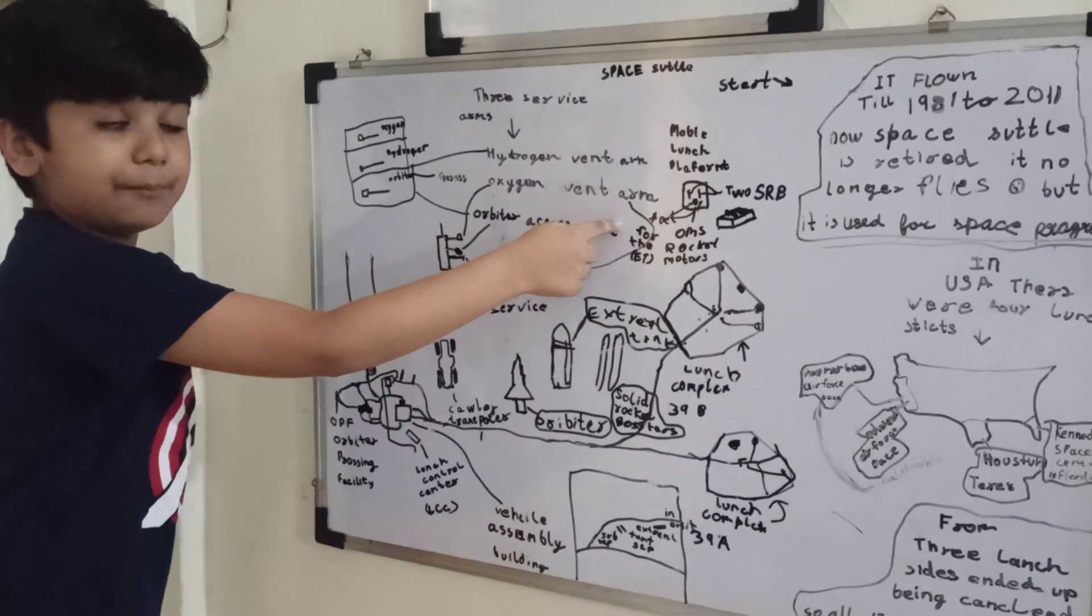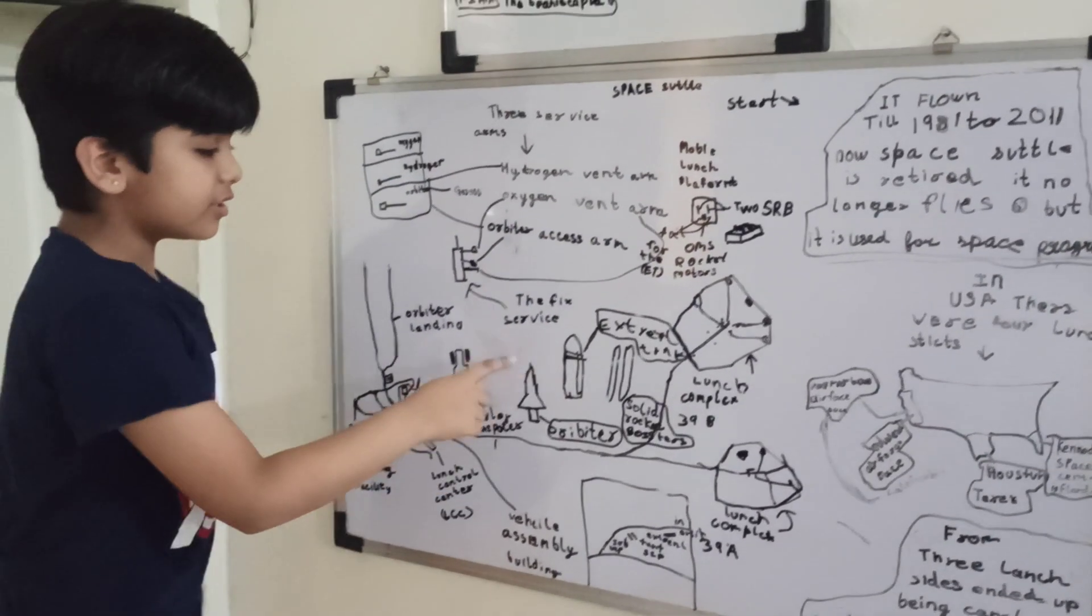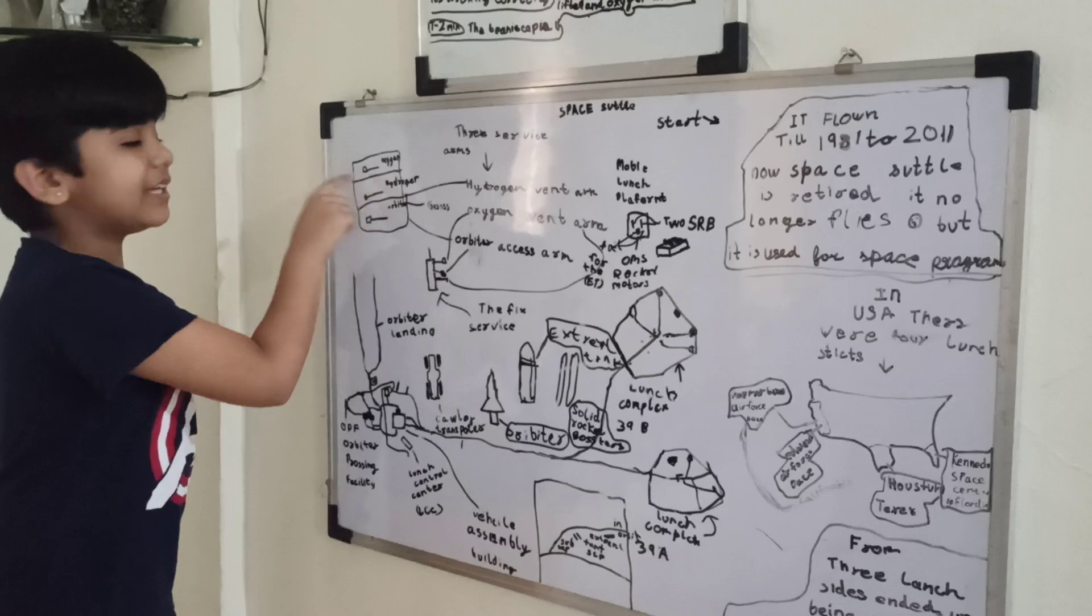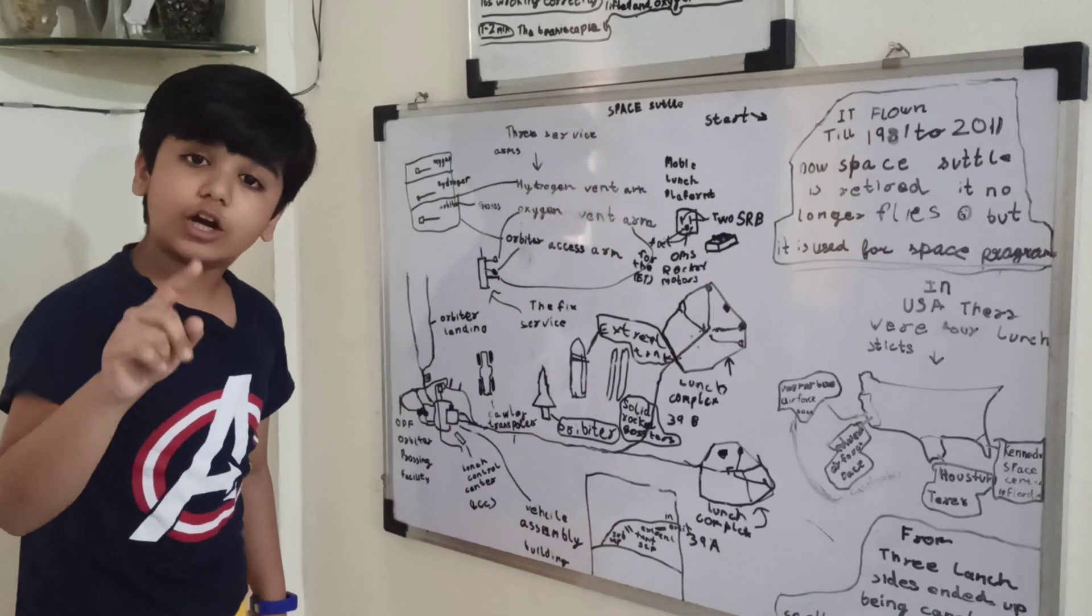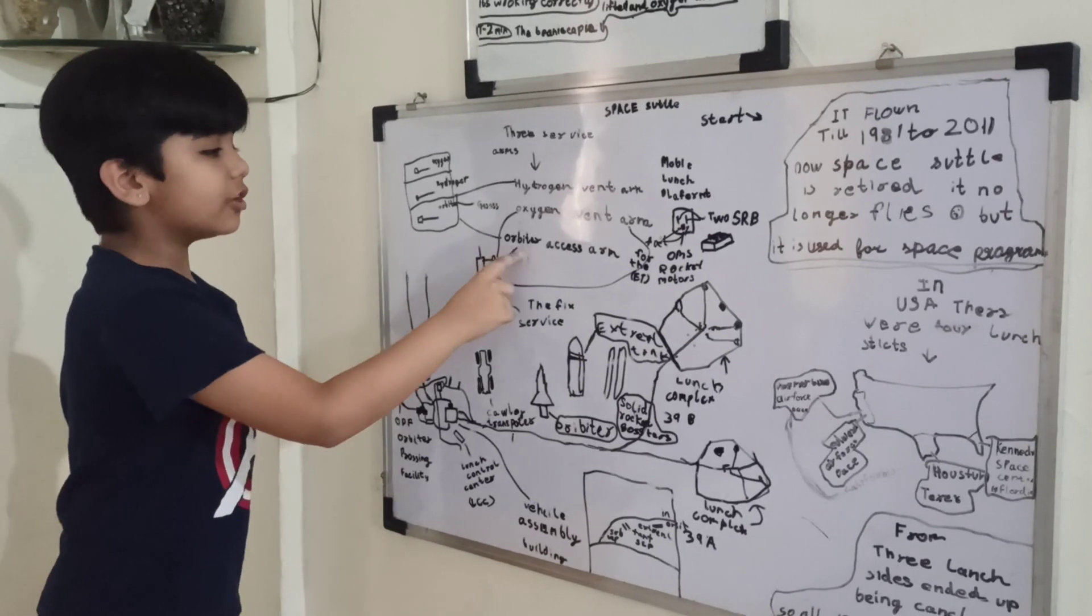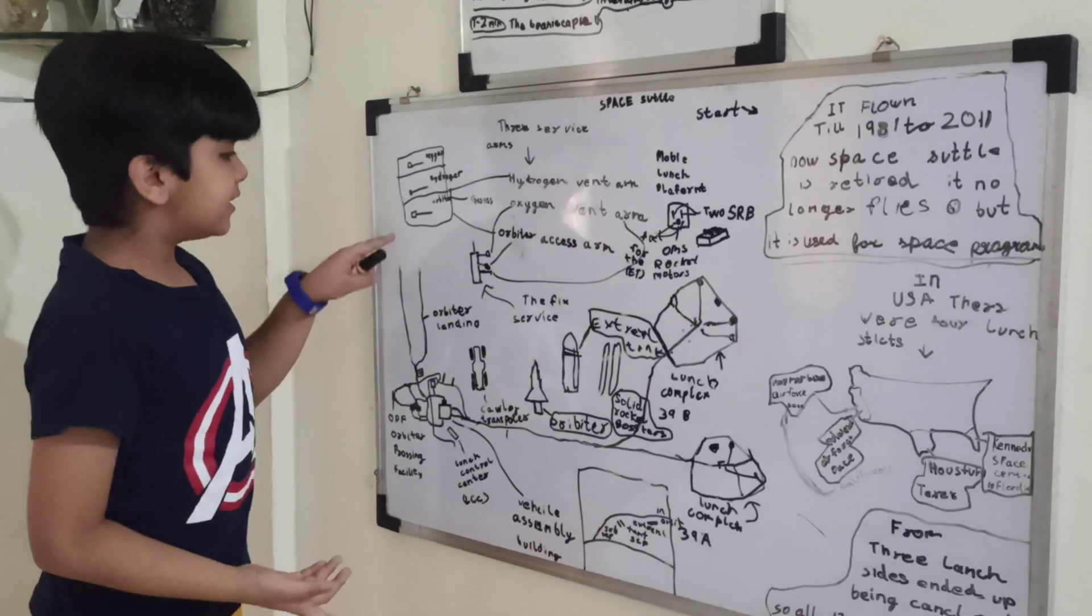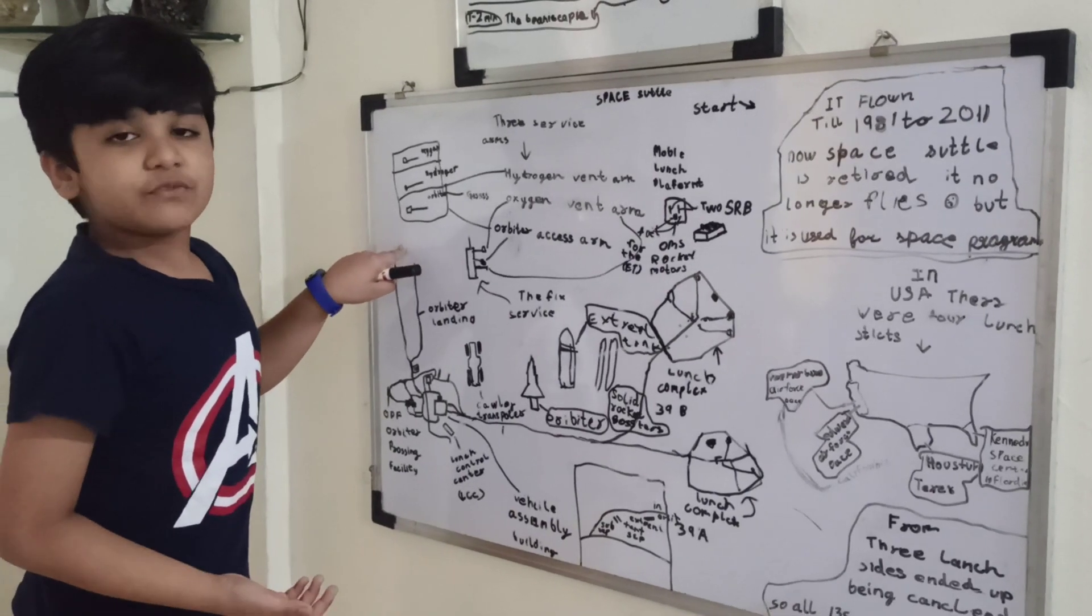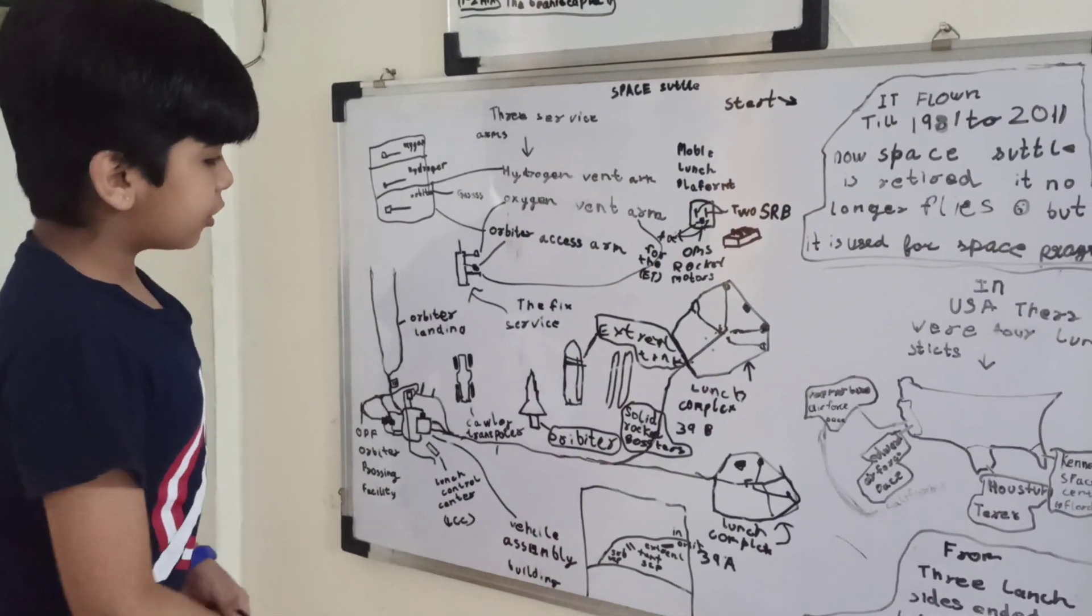The oxygen vent arm keeps the oxygen cool, and that's why the beanie cap is really important, to keep it from freezing. And the orbiter access arm, at the end of the orbiter access arm there is a white room where the astronauts enter the shuttle.